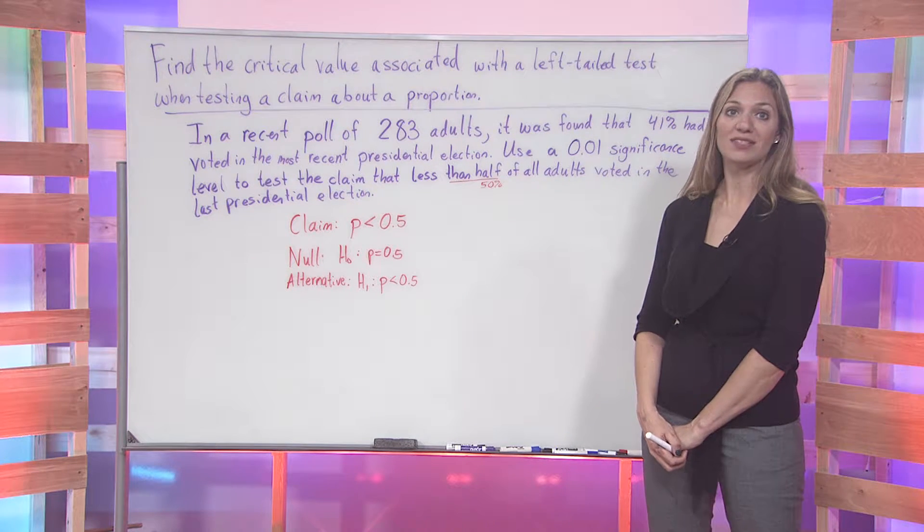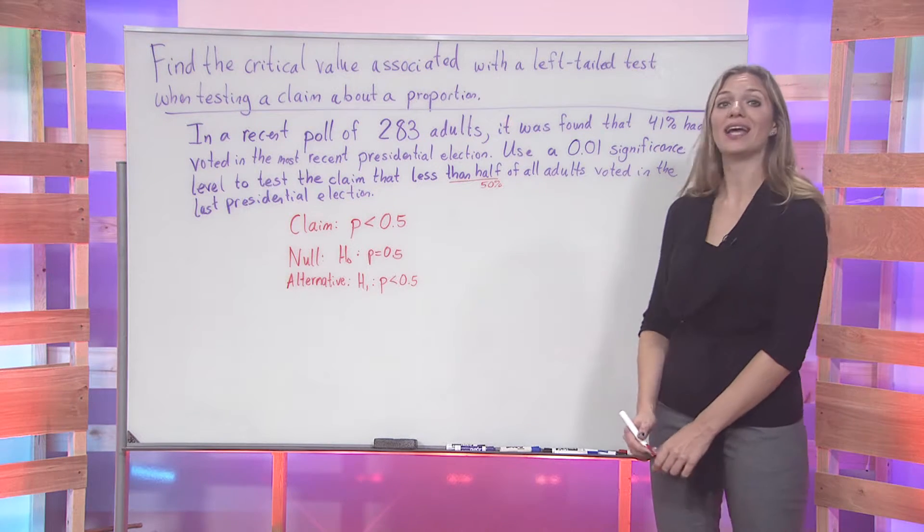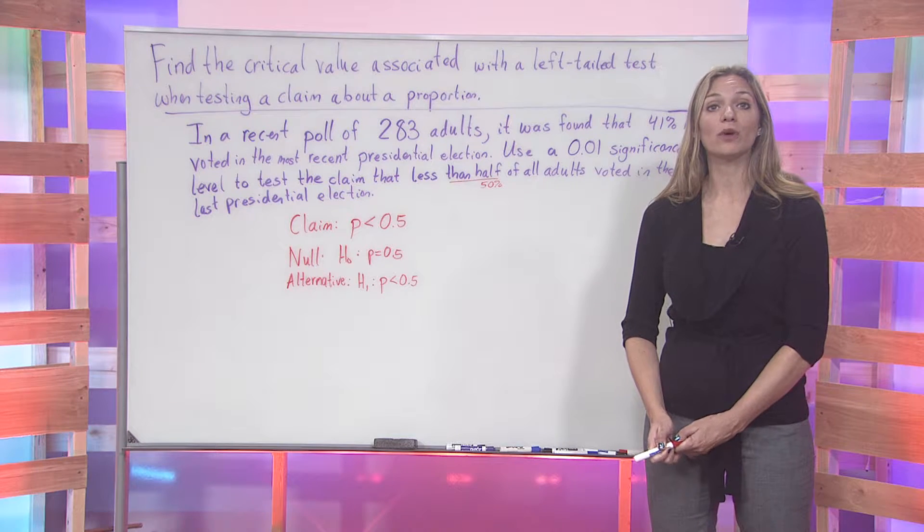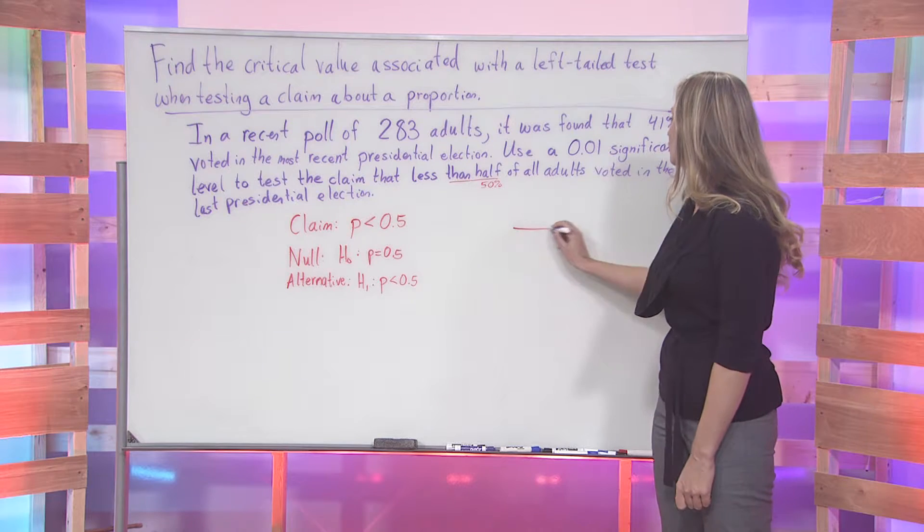Again, the claim itself, p is less than 0.5. Now, since we are talking about a less than case, we are going to be using a left-tailed test here to find the critical value.